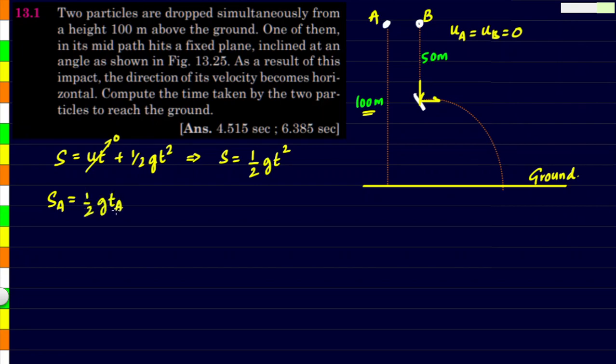Now let's take the case of the first situation. We have sA = 1/2 g tA². Substituting, the distance is 100 meters.